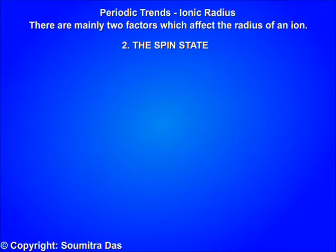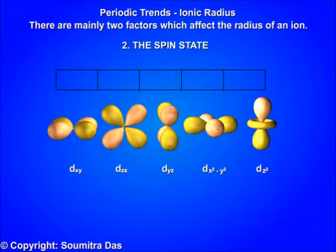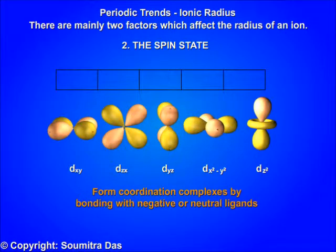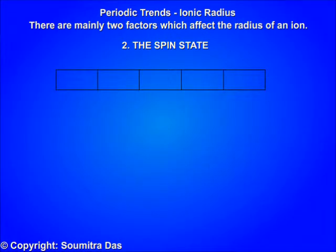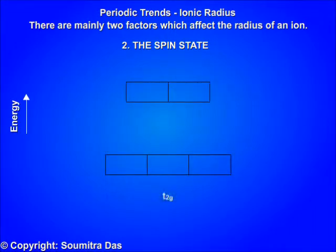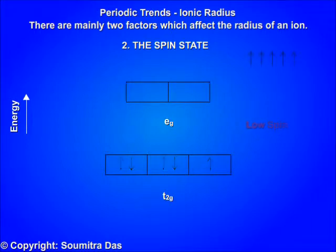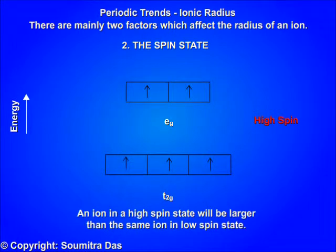Number two: the spin state. In the case of transition metals, there are 5d orbitals which form coordination complexes by bonding with negative or neutral ligands. The transition metal d orbitals split into two parts: t2g, containing 3 orbitals of lower energy, and eg, containing 2 orbitals of slightly higher energy. When electrons pair up in t2g without filling eg, it is called low spin. When all 5 orbitals are singly filled before pairing up, it is called high spin. An ion in the high spin state will be larger than the same ion in the low spin state.